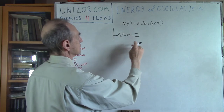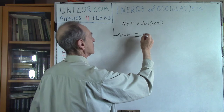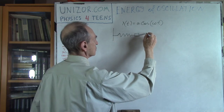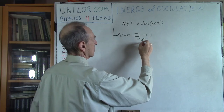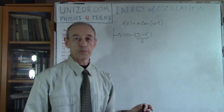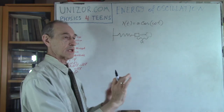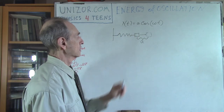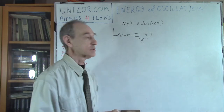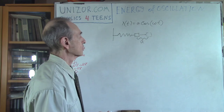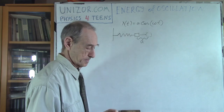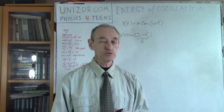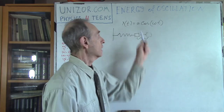If this is the neutral position of the spring, we basically make some effort to move this particular object to this position, stretching it from the neutral position by distance A, and then let it go without any initial velocity. That equation describes the movement where X is the displacement from the neutral point. Now we will talk about a different aspect of these movements — we will talk about energy. This lecture is about energy of oscillation.